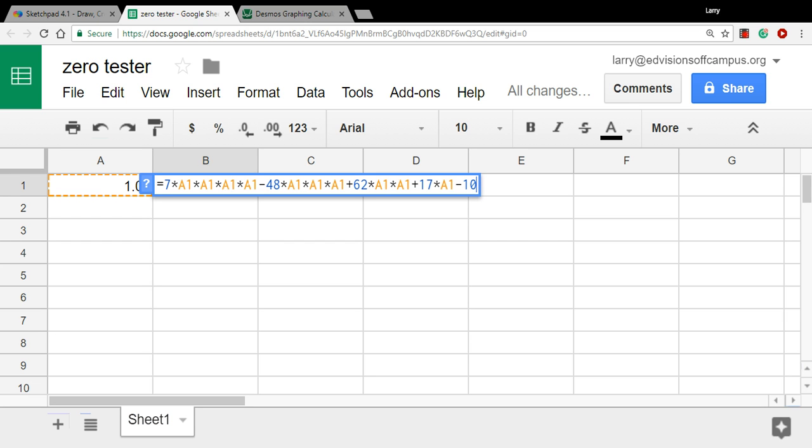And what I've done here, I'm going to zoom in so you can see it better, is in this cell, that's where you can type in a value, a zero to test. And in this cell, I've set up the function. This is 7 times the value in A1. So that's 7 times x to the fourth, minus 48x to the third, plus 62x squared, plus 17x minus 10. So that is our function. It'll calculate the value of the function. What we're looking for here is a 0.